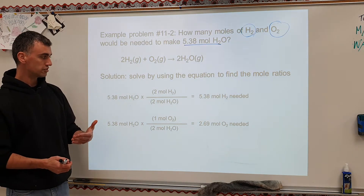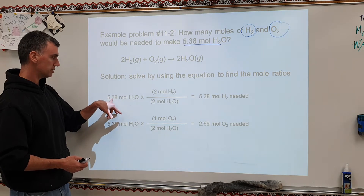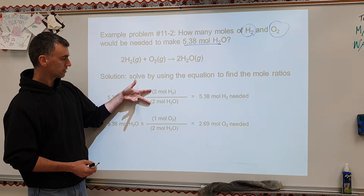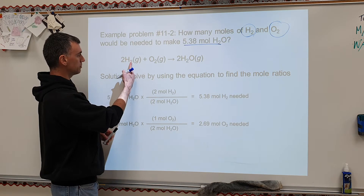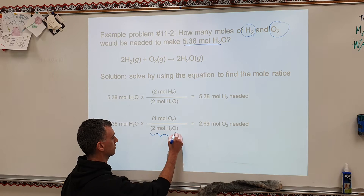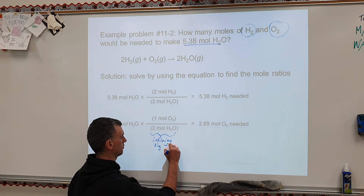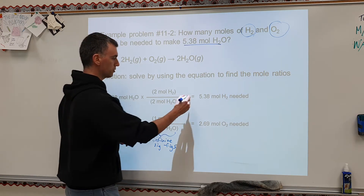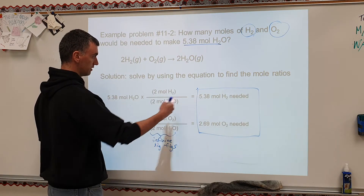Make sure to watch significant figures as you do this. This is 3 sig figs, so the answer is 3 sig figs. Why is the coefficient not one significant figure? Because any number that comes out of a balanced equation is always considered infinite significant figures. Make sure to note that. Box your answers — 3 sig figs, 3 sig figs, 3 sig figs.